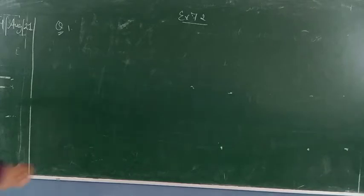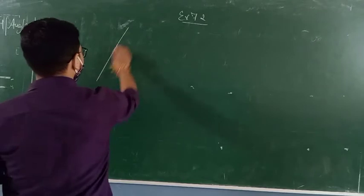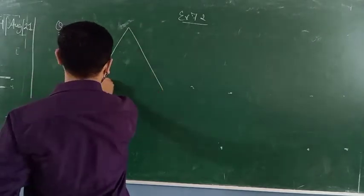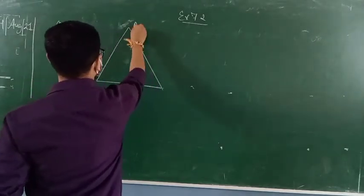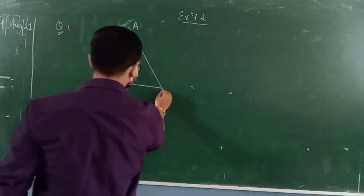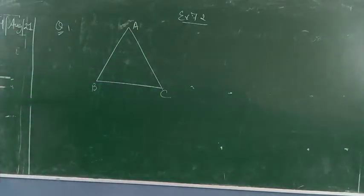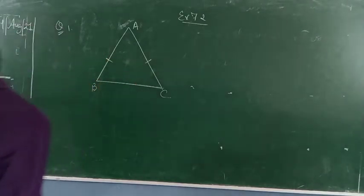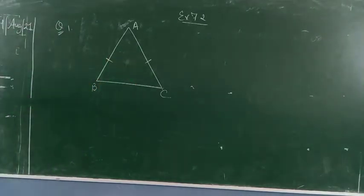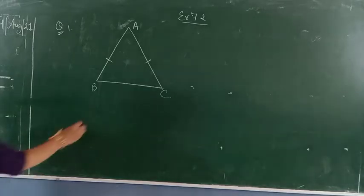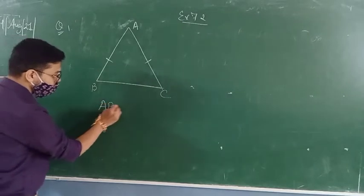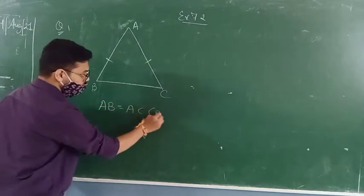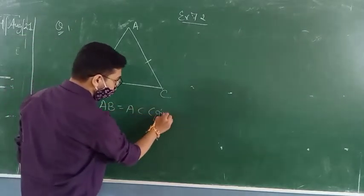In an isosceles triangle, let's say ABC — I have drawn one isosceles triangle. Let's say this point is A, this point is B, and this point is C. In an isosceles triangle ABC with AB equals AC — AB equals AC is given in the question.